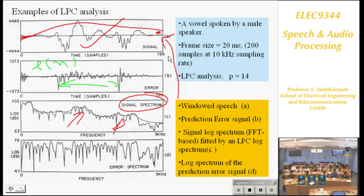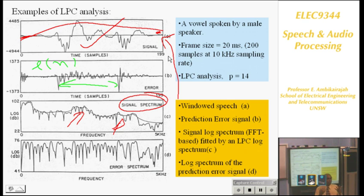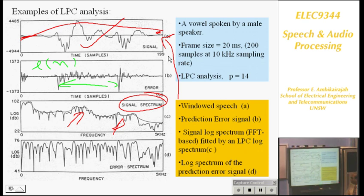The difference: in the LPC spectrum, we are only looking at the vocal tract resonance. In the raw speech spectrum, you are seeing the excitation as well. The vocal tract resonances are very smooth; if you have excitation, you have harmonics. So you see harmonics in the raw speech spectrum. The error spectrum — if you have regular pitch pulses, the error spectrum is reasonably flat.